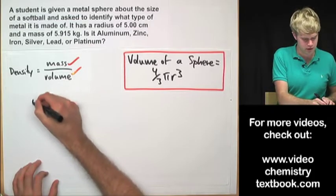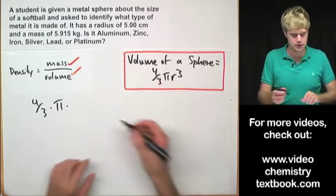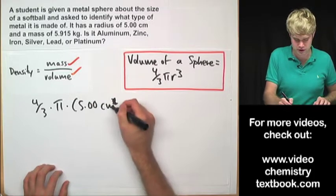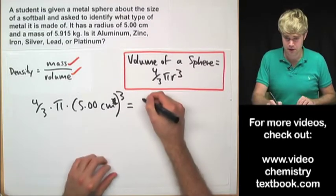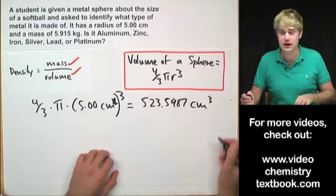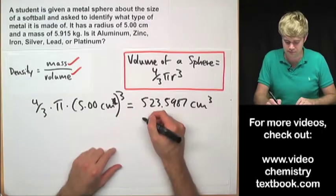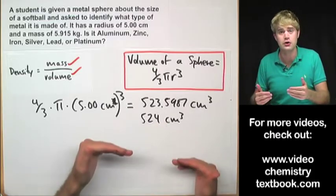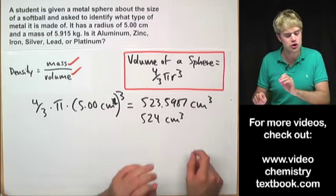We are going to do 4 thirds times pi times r cubed which is going to be 5.00 centimeters cubed. And that is going to give us 523.5987 cubic centimeters. So I've got 3 sig figs here, 4 thirds and pi, we don't worry about the sig figs there. So I'm going to round this to 524 cubic centimeters and this is the number that I'll use for volume from now on. So now we know the volume of the sphere, 524 cubic centimeters.